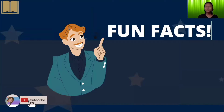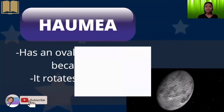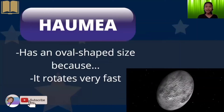Let's have some fun facts. Haumea has an oval shape because it rotates very fast.